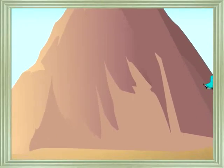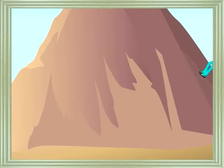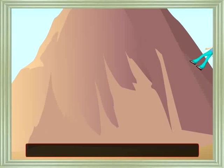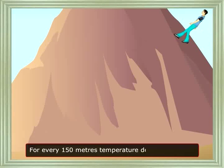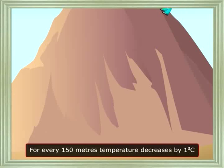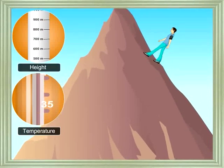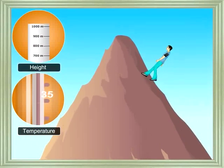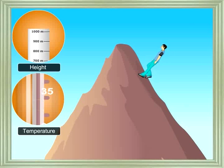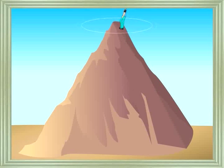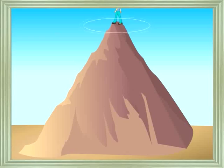The temperature varies with altitude. For every 150 meters of increase in altitude, temperature decreases by one degree centigrade. So the temperature at the top of a hill is low in comparison to the bottom of the hill.